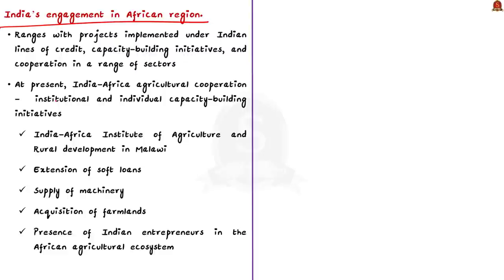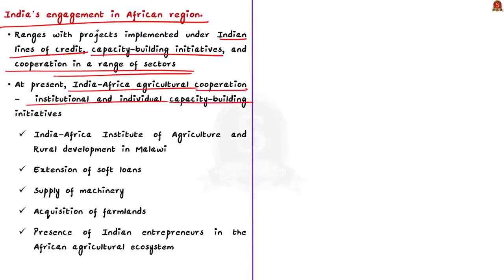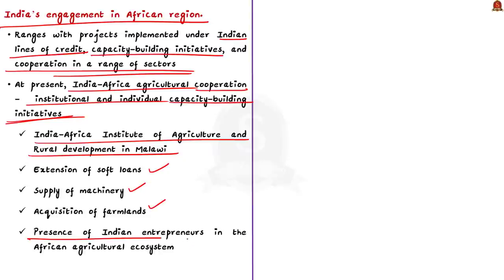New Delhi's engagement with the African continent has different aspects and features, ranging from projects implemented under Indian lines of credit, capacity building initiatives, and cooperation in a range of sectors. Currently, India-Africa agricultural cooperation includes institutional and individual capacity building initiatives, the India-Africa Institute of Agriculture and Rural Development in Malawi, extension of soft loans, supply of machinery, acquisition of farmland, and the presence of Indian entrepreneurs in the African agricultural ecosystem.